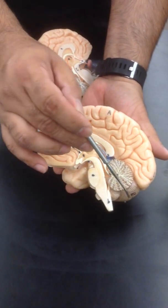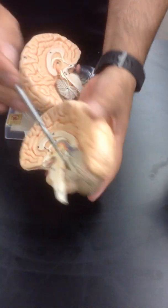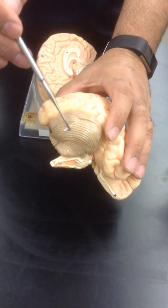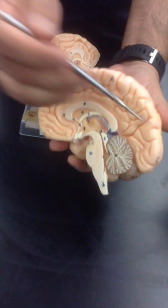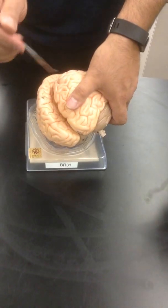From there, you come to the back of the brain. This is known as the cerebellum. Cerebellum means little brain, because that's the second largest part of the brain. From there, we're going to get to the cerebrum, which is the largest part of the brain.